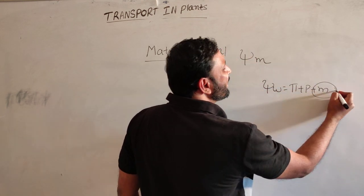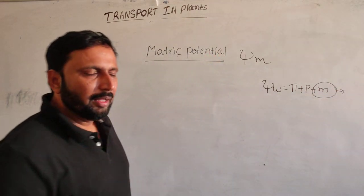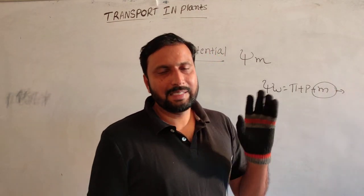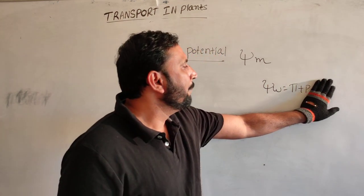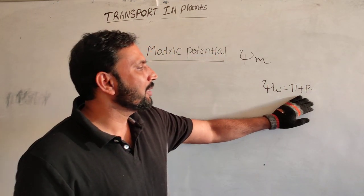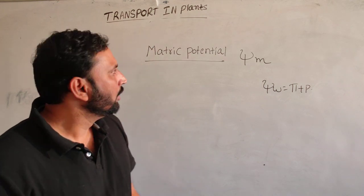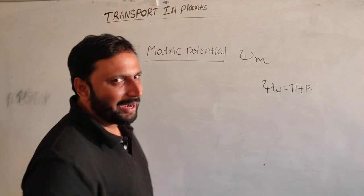Actually this matric potential is negligible, only seen in dry seeds, dry materials. So that is why water potential is equal to π + p, osmotic potential plus pressure potential.